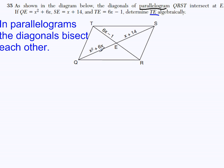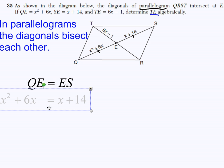So, I can say that QE is equal to ES, because they bisect each other. E is acting like a midpoint. QE equals ES because the diagonals bisect each other. I'm just going to go ahead and write QE equals ES here. Since QE equals ES, I can write X squared plus 6X equals X plus 14, because X squared plus 6X represents QE, and X plus 14 represents ES.